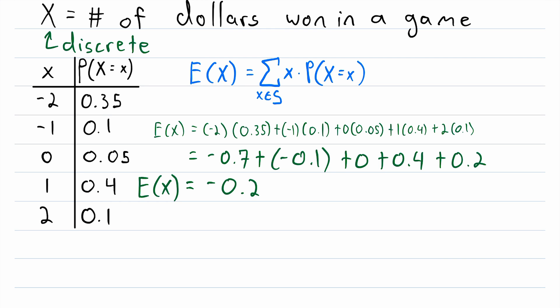but it tells us what we would expect to happen long term. So if we only played this game once, of course, the most likely outcome would be that we win $1. That's clearly the most likely outcome as given in the probability mass function.